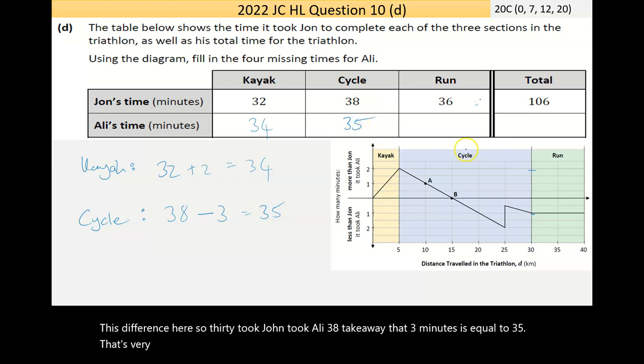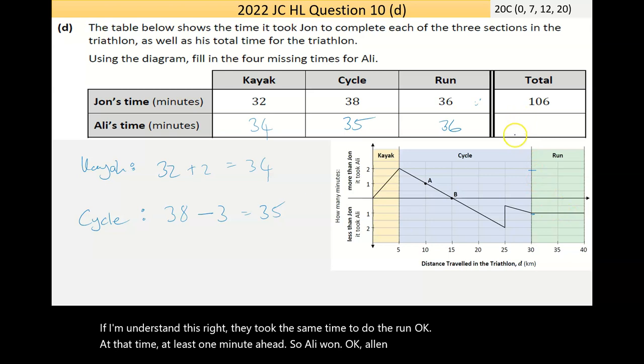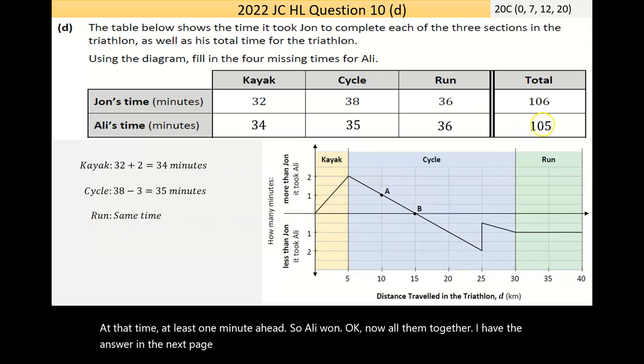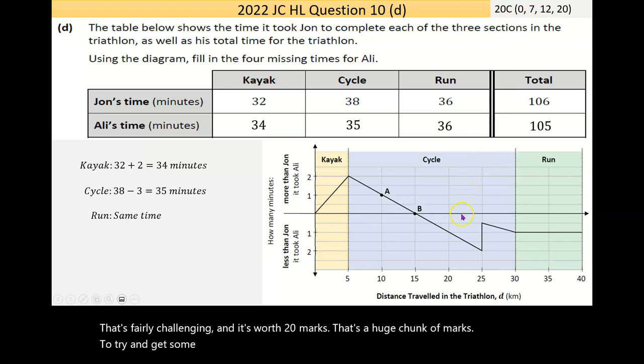It's very challenging. Now the run should be the same, isn't it? Can we make sure? Yeah, if I'm understanding this right, it took the same time to do the run. At that time, Ali's one minute ahead. So Ali won. Now add all of them together, I have the answer to the next page. I get 105 minutes. So Ali finished the race one minute quicker than John. And that's fairly challenging now. And it's worth 20 marks. That's a huge chunk of marks to try to get something out of. So it's a hard question to understand.